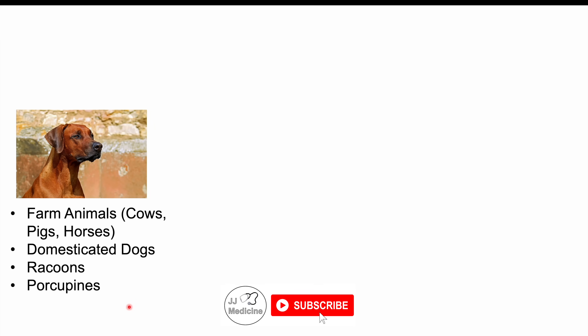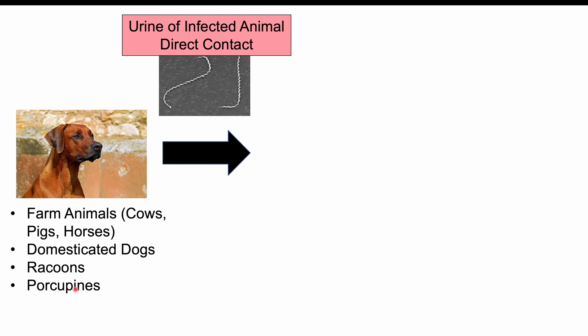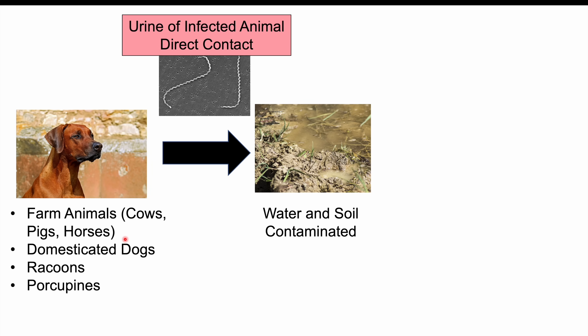Individuals get infected with Leptospira interrogans via contaminated dog urine, but also from other animals including farm animals like cows, pigs, and horses, as well as raccoons and porcupines. When these animals urinate into the environment, the bacteria enter water and soil. The bacteria can survive in water for up to 16 days and in soil for up to 24 days without a new host.